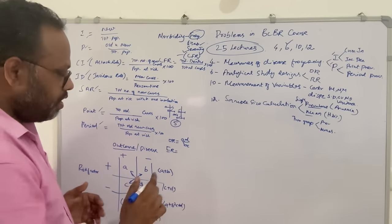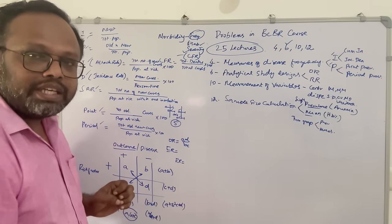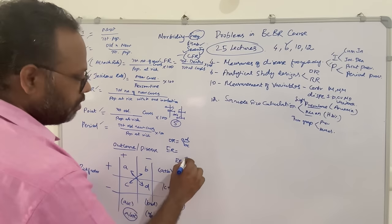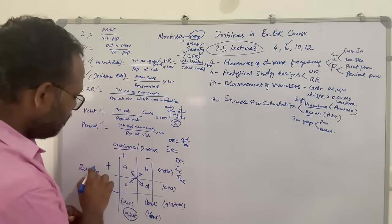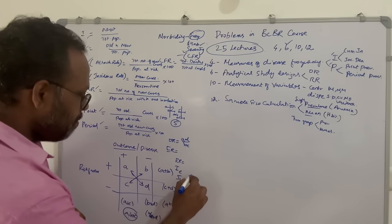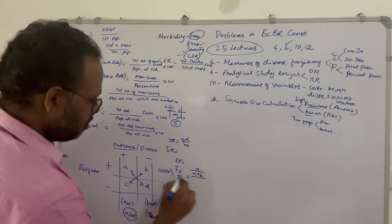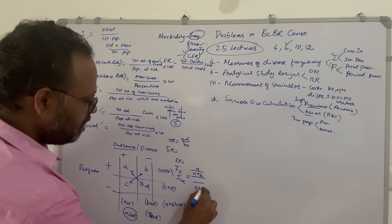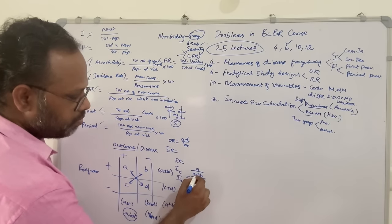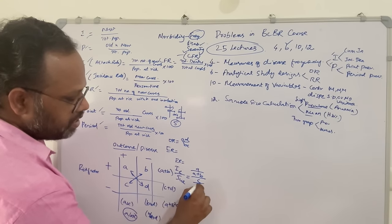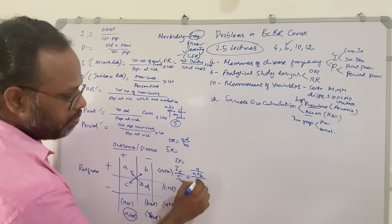For cohort study, we use relative risk. Before calculating relative risk we should know about incidence — cohort study is otherwise called an incidence study. We can calculate incidence among the exposed: A divided by A+B; and incidence among the unexposed: C divided by C+D. Relative risk is given by incidence among the exposed divided by incidence among the unexposed — that is (A / A+B) divided by (C / C+D).